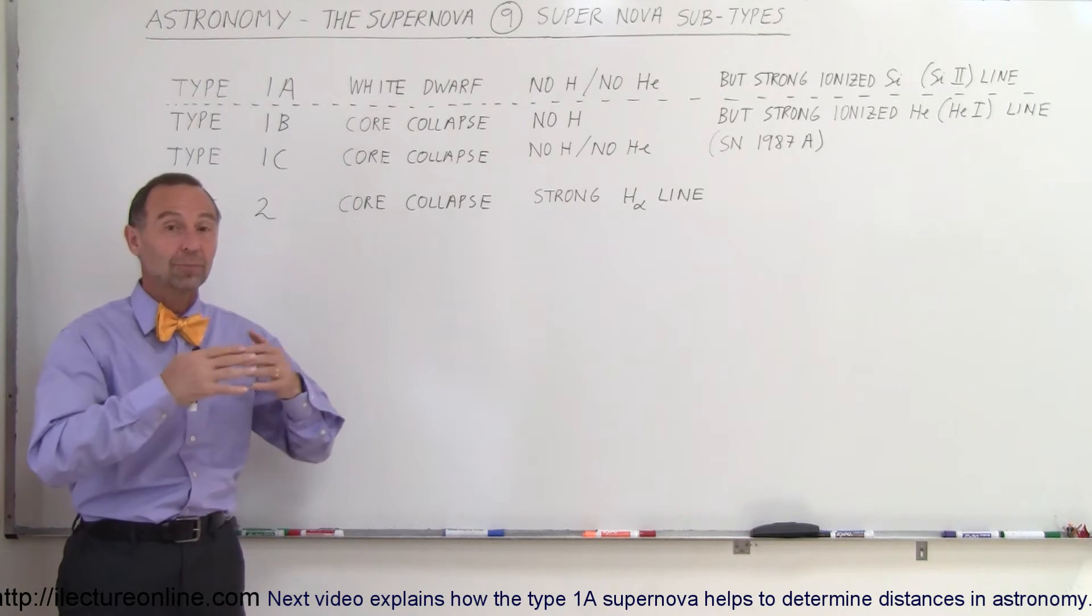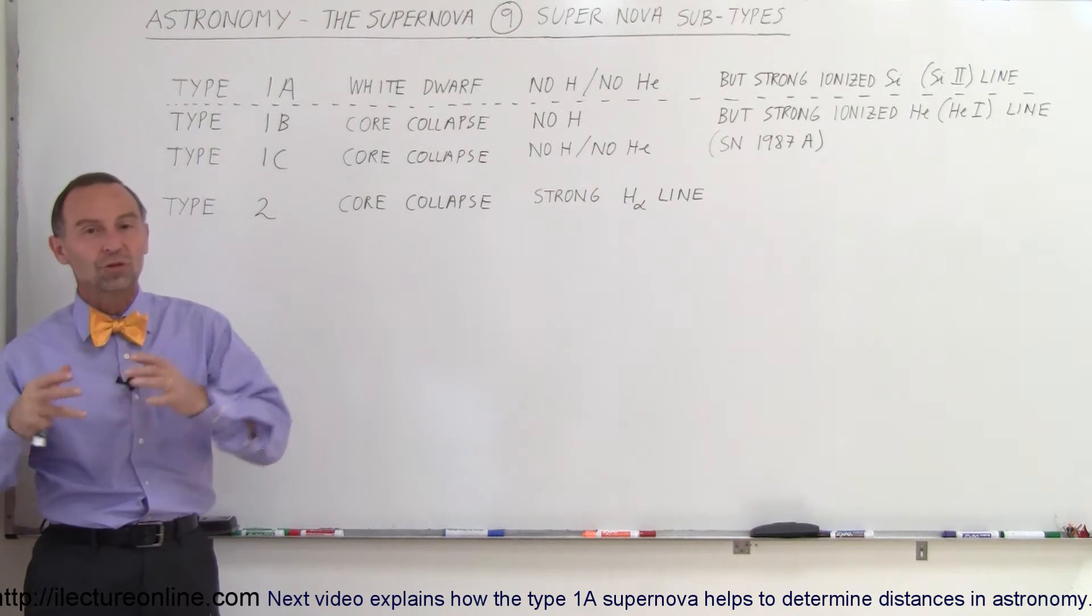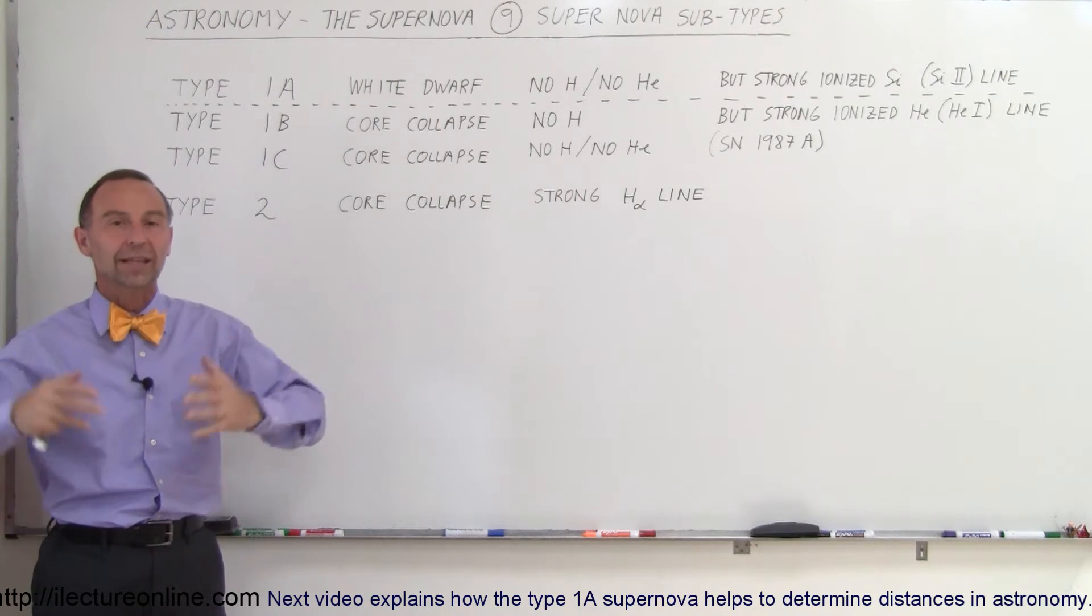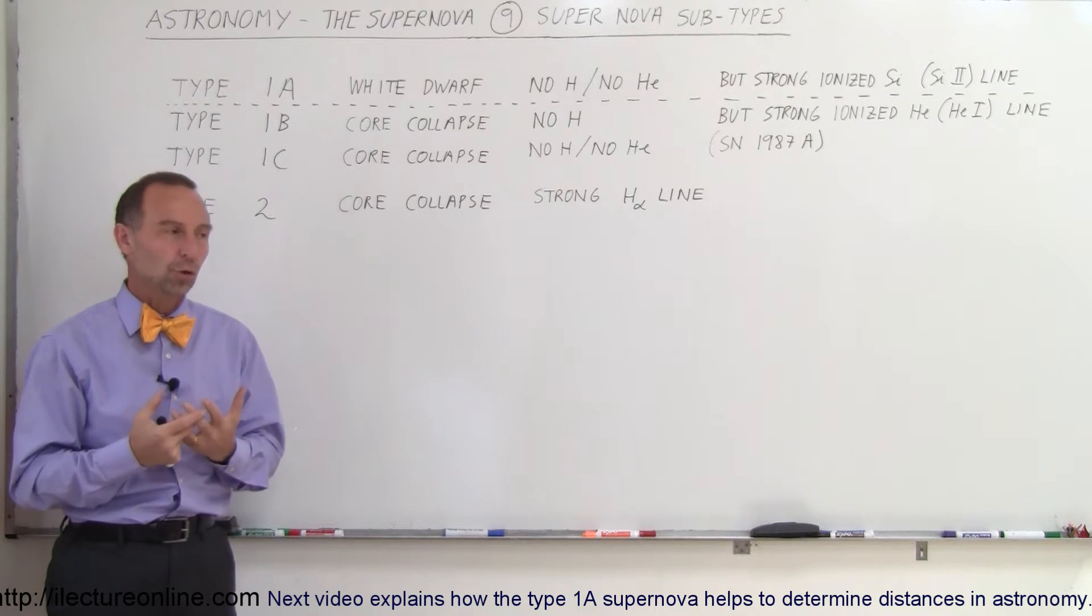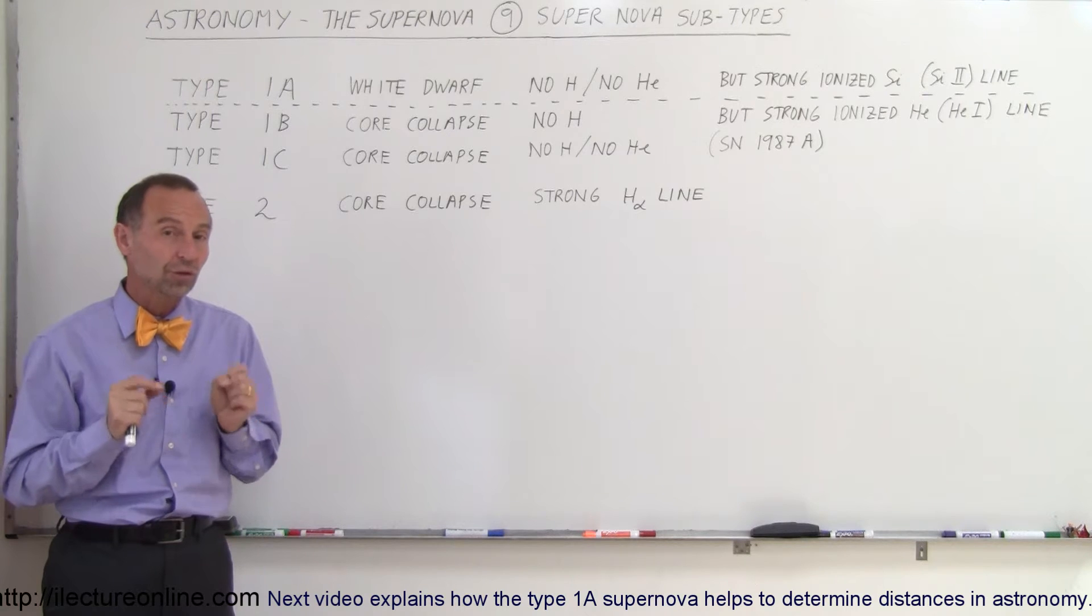There are the Type 1a, which are caused by white dwarfs that are exploding, and the Type 2, which is the supermassive red giants that explode to have a core collapse explosion. So those are the only real two reasons why supernova explosions occur.